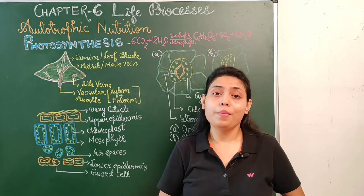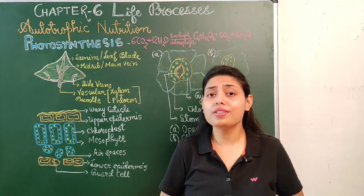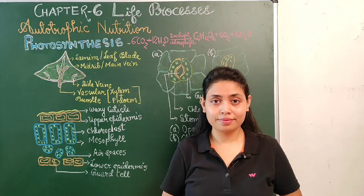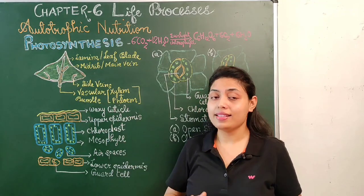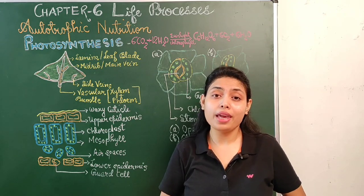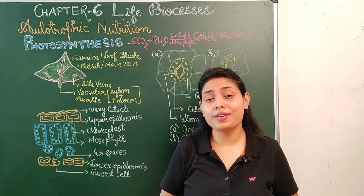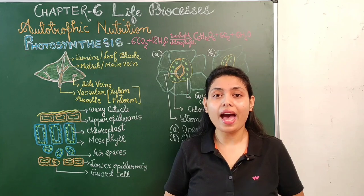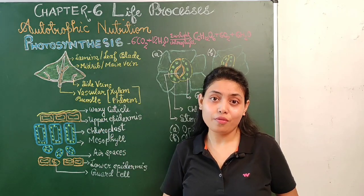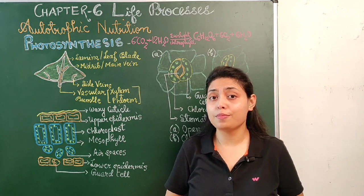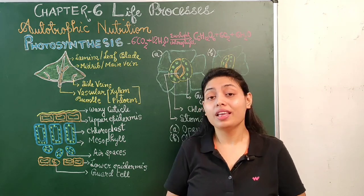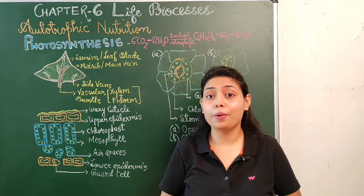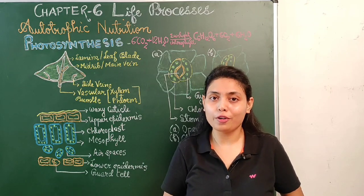The midrib or main vein is made up of numerous tiny tubules which carry water and minerals to the leaf. The veins that arise from the main vein are known as side veins, and their function is the same. Veins are made up of special tissue known as vascular bundles, which are composed of two types of tissue: xylem and phloem. Xylem helps to transport water, while phloem helps to transport the prepared food from the leaf to different parts of the plant.